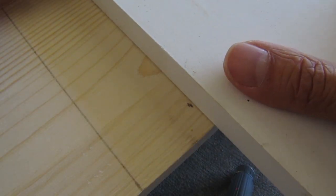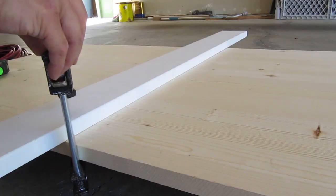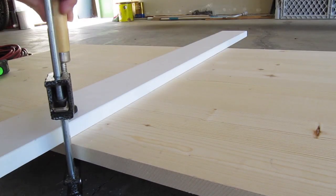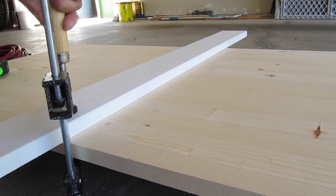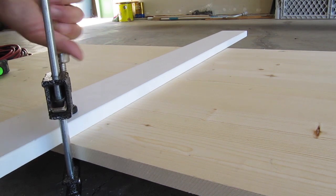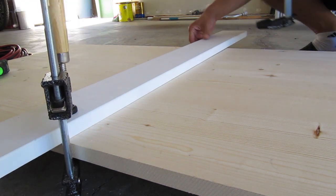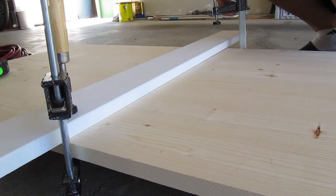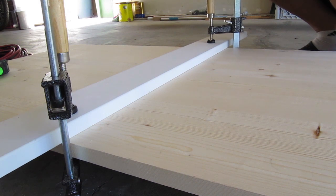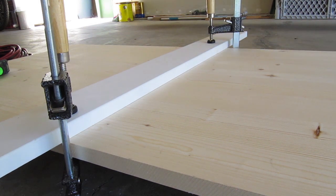Now align a scrap piece of wood or yardstick on these two marks and clamp it securely in place. This is our cutting guide and it's important that it doesn't move.